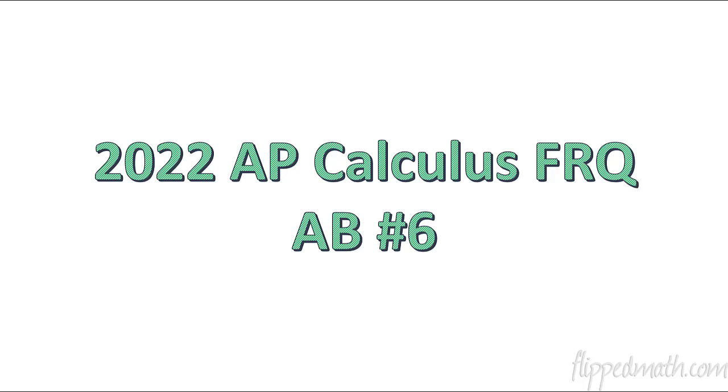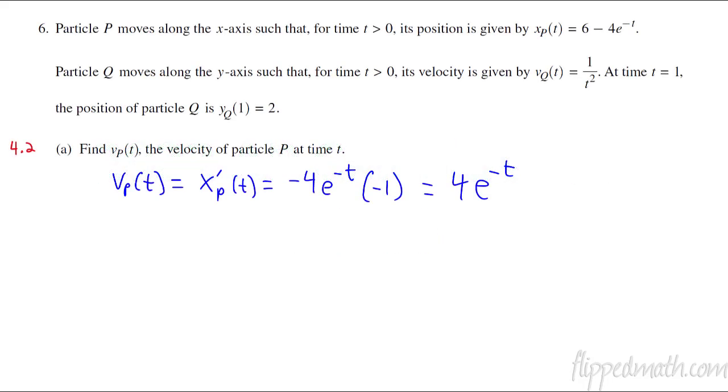Hello, this is Mr. Bean from flippedmath.com. Welcome to a walkthrough on the 2022 AP Calculus free response question, and this is for AB problem number six. This problem is dealing with two different particles. We have particle P, and it's traveling along the x-axis, and then particle Q is going along the y-axis.